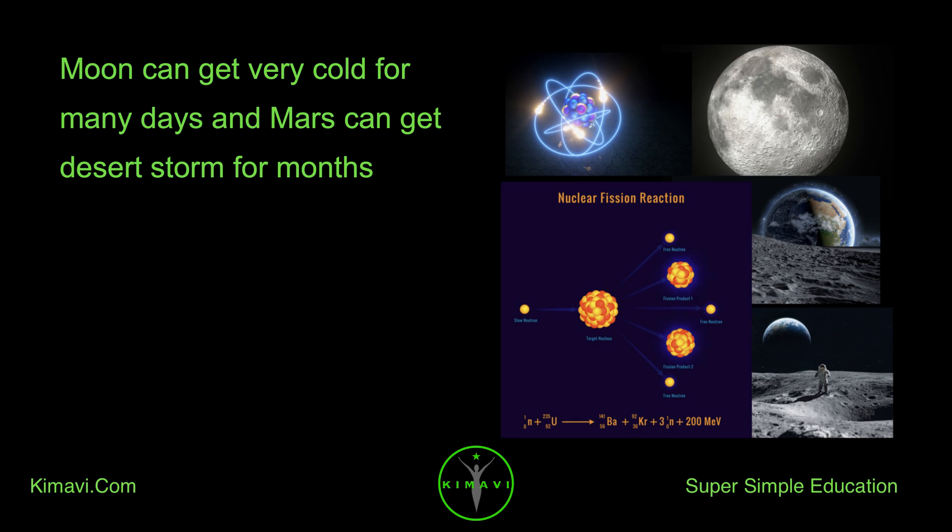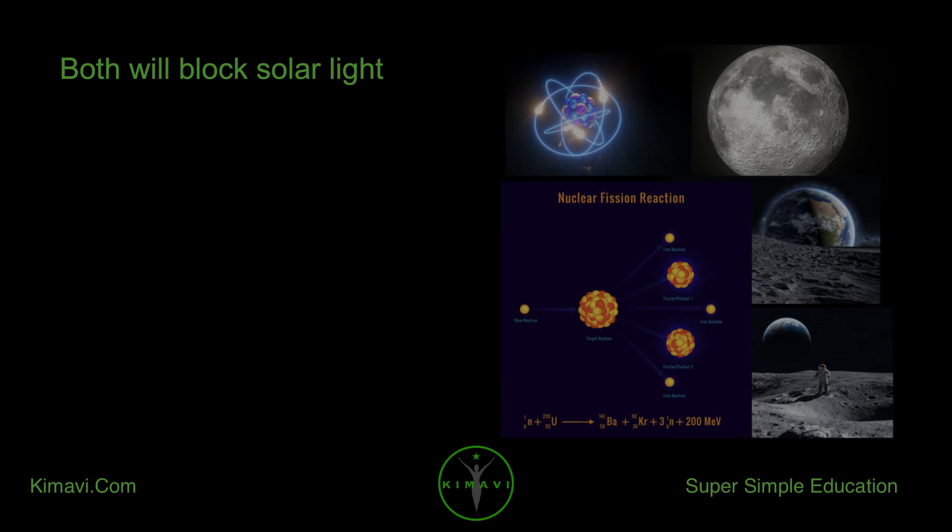Moon can get very cold for many days and Mars can get desert storms for months. Both will block solar light.